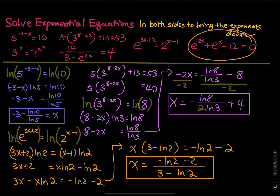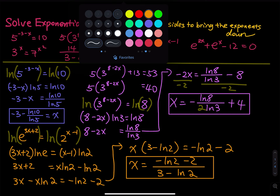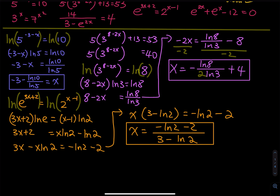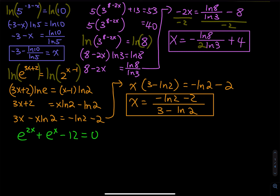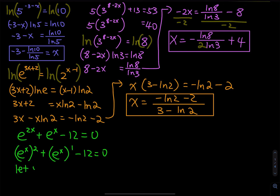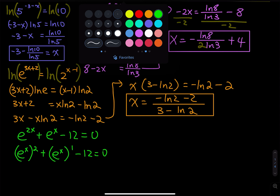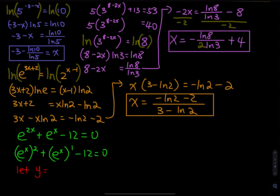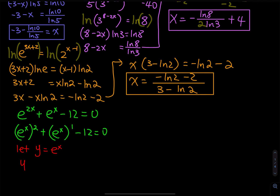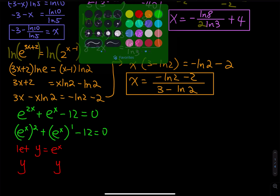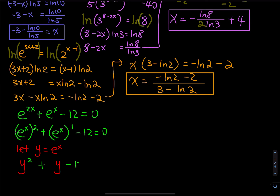The next equation is e to the 2x plus e to the x minus 12 equals to 0. We are going to do a substitution. e to the 2x becomes e to the x, raised to the second power. We let y equal to e to the x. So this becomes y squared plus y minus 12 equals to 0.